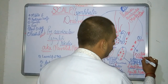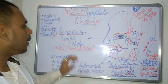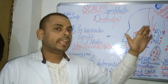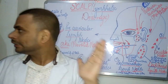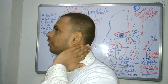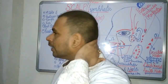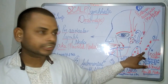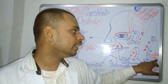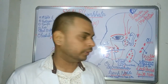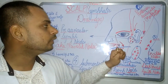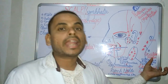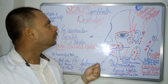Moving on to the third group: the occipital lymph nodes, or occipital nodes. These lie in the occipital region of the skull. Since their location is adjacent to the occipital region, they are known as the occipital nodes, and they drain the most posterior aspect of the scalp.